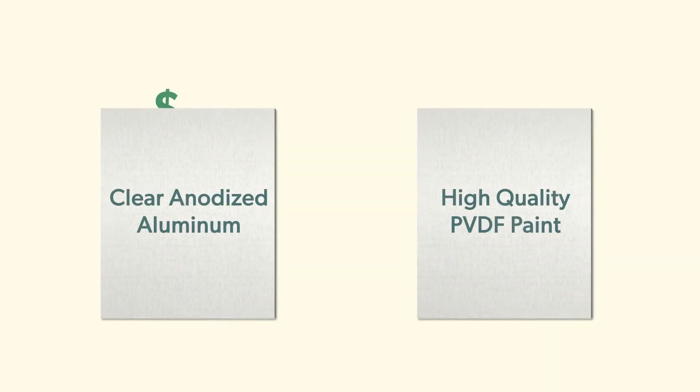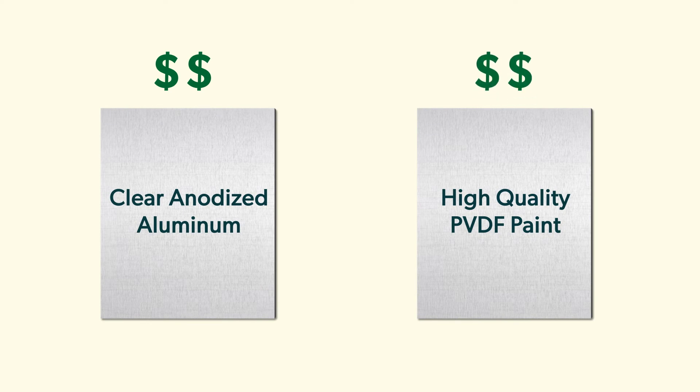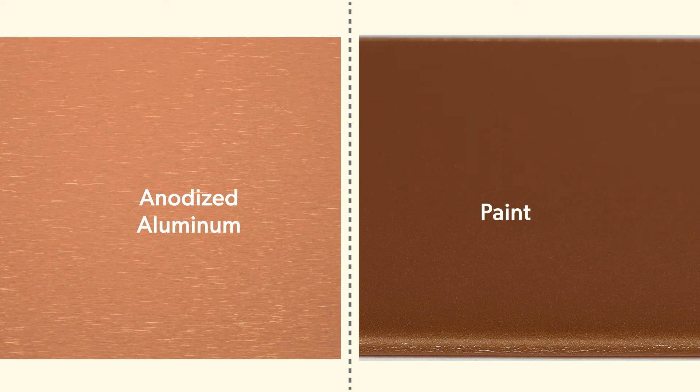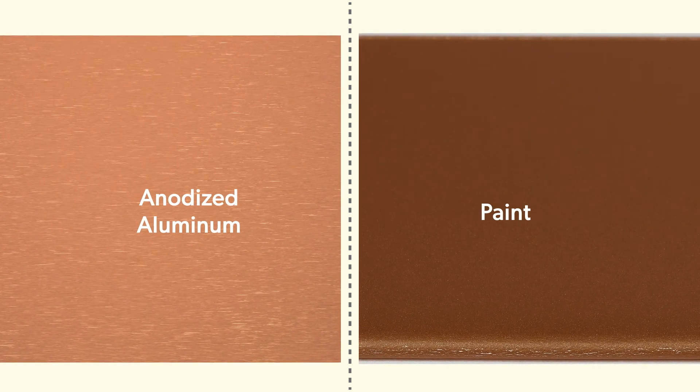The cost of clear anodized per square foot or meter is comparable to a high-quality PVDF paint. For a true bronze, copper, or zinc look, anodized aluminum may be a little more expensive than paint.